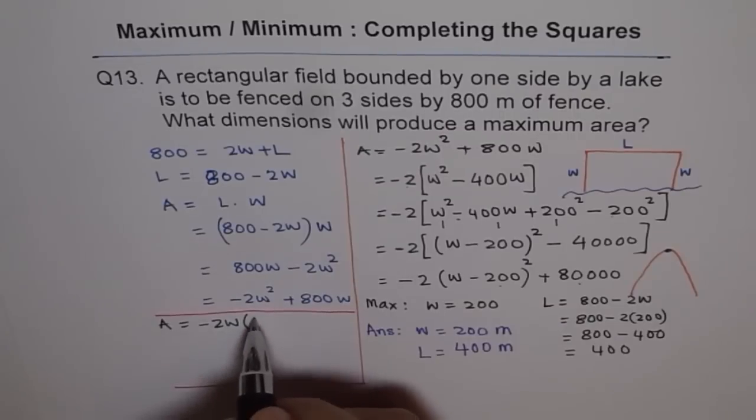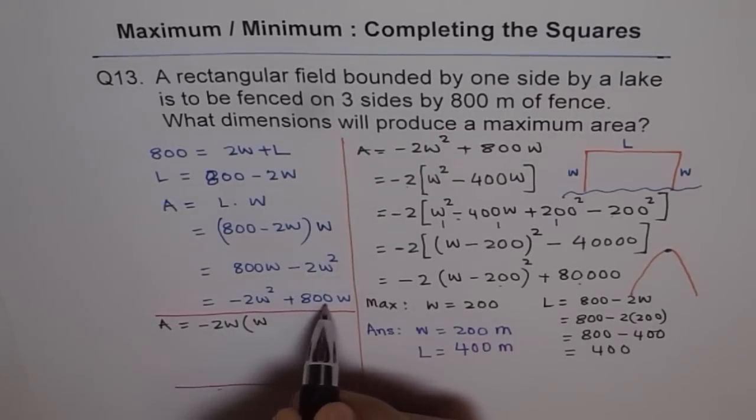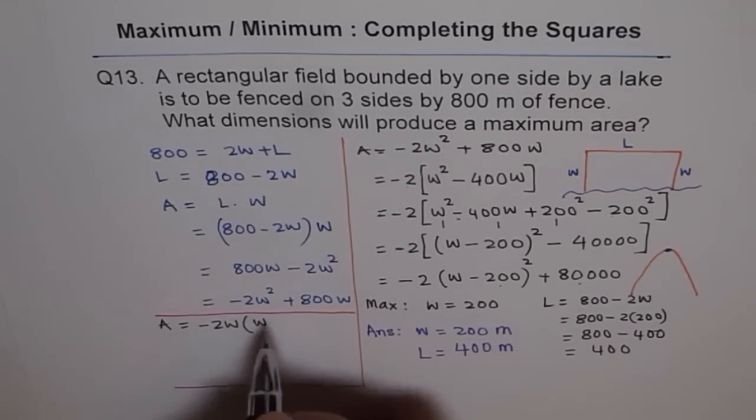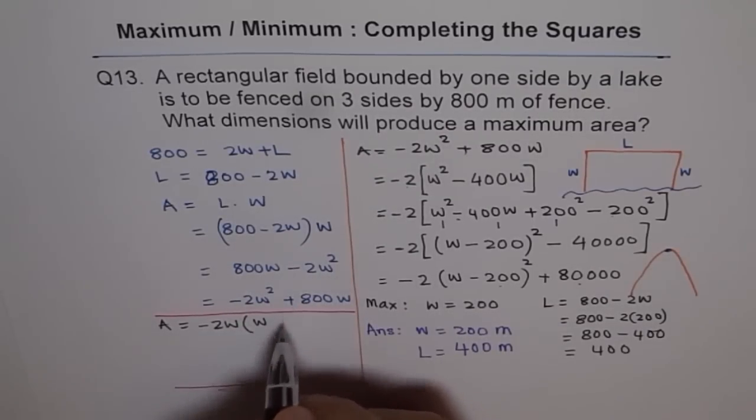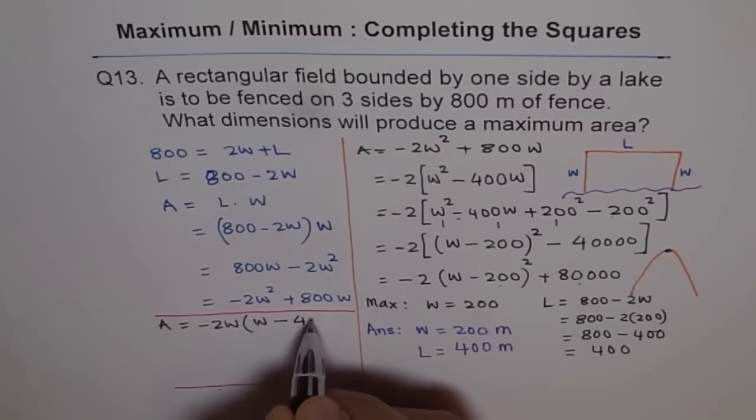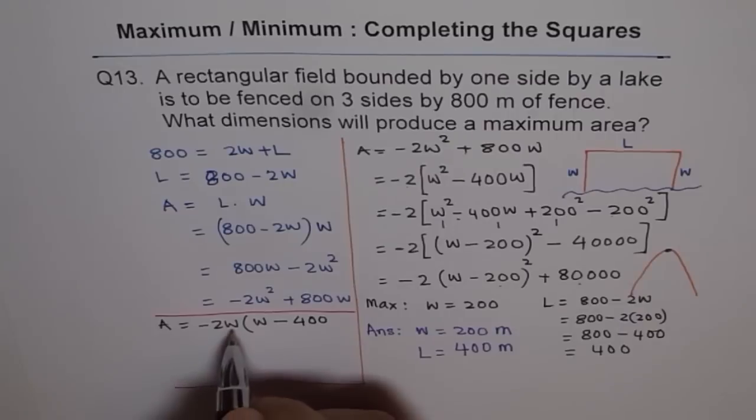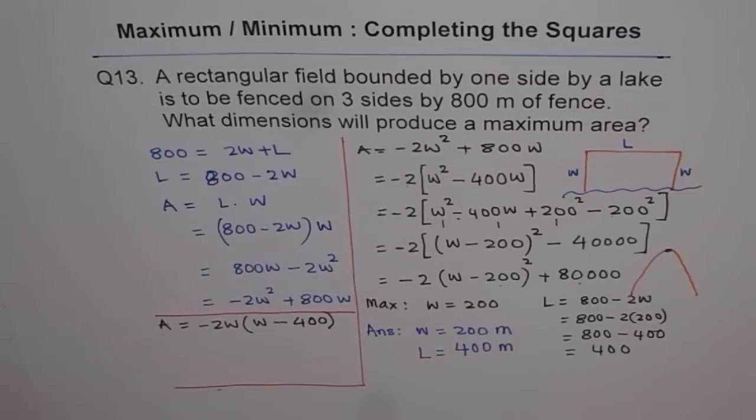So we get area equals to what is common here, minus 2W. So minus 2W, if you factor out, you get W here. 800 divided by minus 2 will give you 400 with minus sign. So minus 400. W has already been factored. That is what you get.